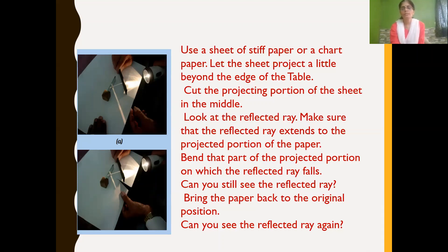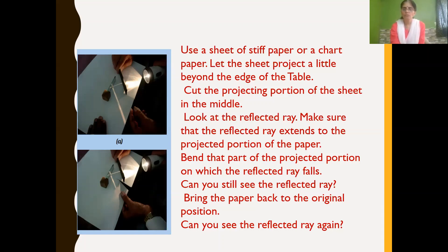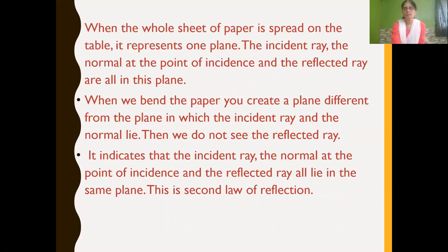Keep the plane mirror on the other side. When light is passed through the paper, you can see that the light gets reflected back. Now look at the reflected ray and make sure that the reflected ray extends to the projected portion of the paper on which the reflected ray falls. Now bend part of the projected paper. When you pass light through the bent projected portion of the paper, can you see the reflected ray? No.